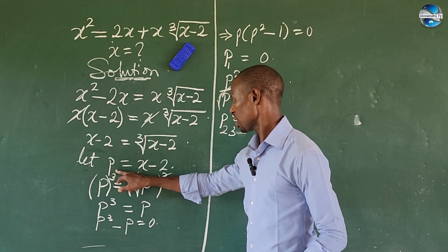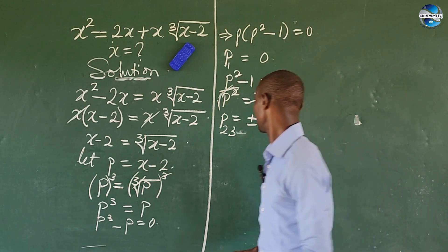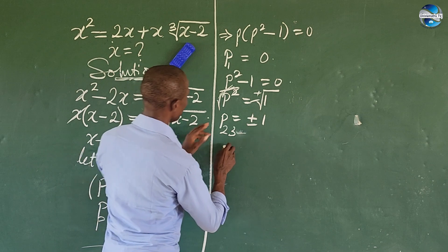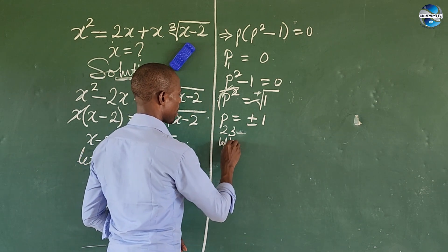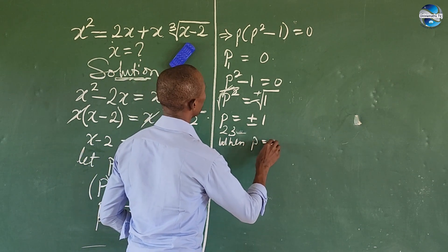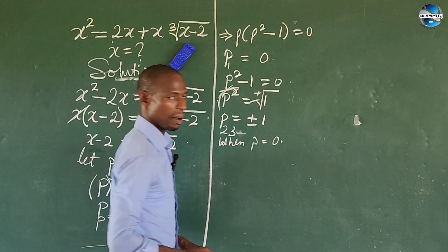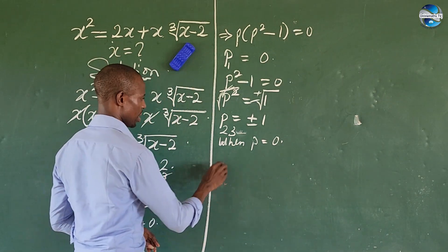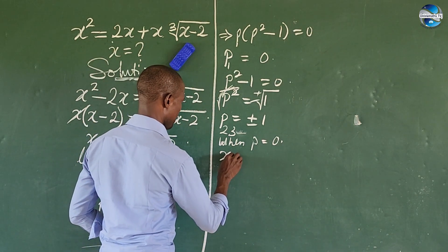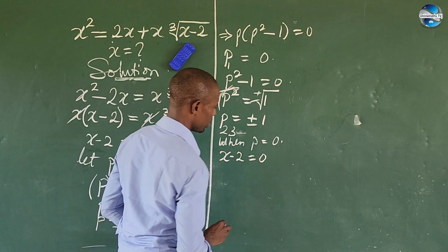So let's get the actual value for our x. For case one, we say when p equals zero, which is our p₁, what would be the value of x? That gives us x minus 2 equals 0.